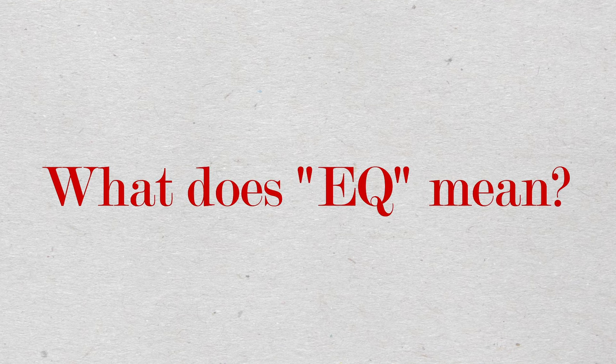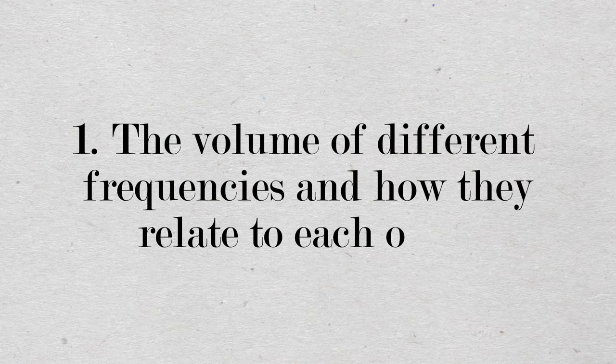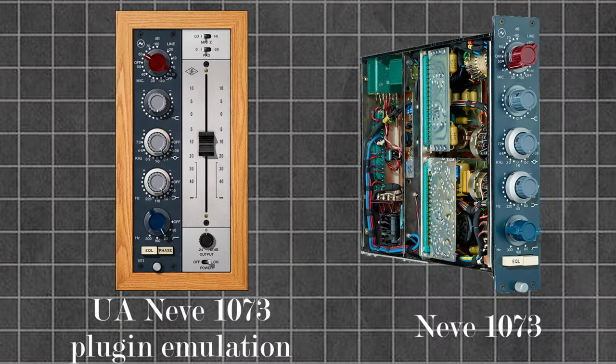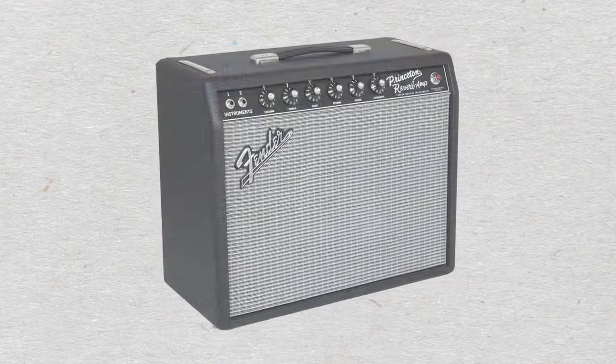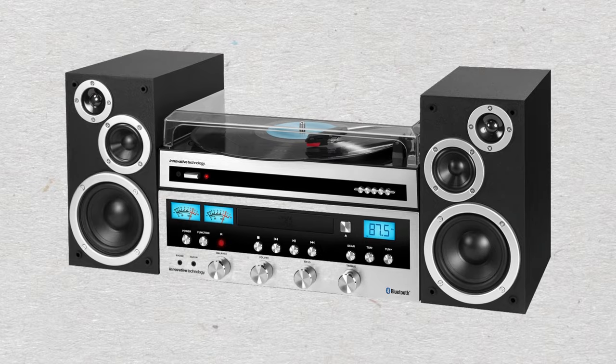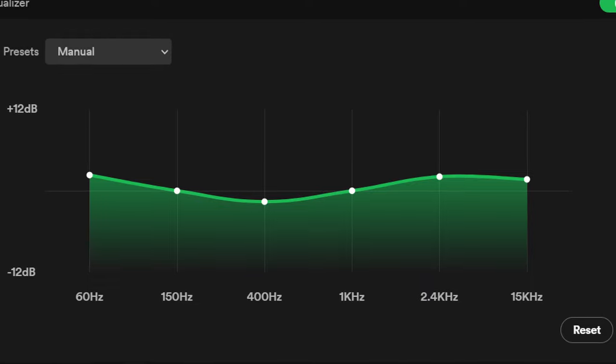First of all, what does EQ actually mean? What do we mean by low-end and mid-range and high-end? EQ, or equalization, has two meanings: the first being the volume of different frequencies and how they relate to each other, and the second being a device, either analogue or digital, which alters that relationship. Lots of people have used EQs in their day-to-day life without realising — guitar amps, car radios, home stereos, or even just on Spotify.